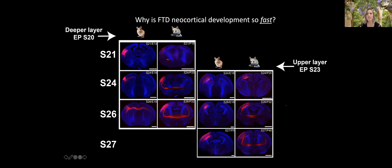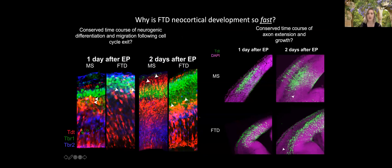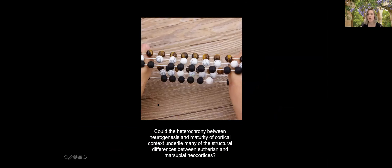We're interested in quantifying which developmental processes — such as migration and axon extension — contribute to this fast-then-slow pattern: whether all of them are sped up and slowed down equivalently, or whether some are more temporally plastic during development and evolution while others are more fixed and dependent on absolute time frames. We're doing this by performing electroporations and quantifying in detail the different stages of migration and axon projection in terms of absolute days following electroporation within each species.